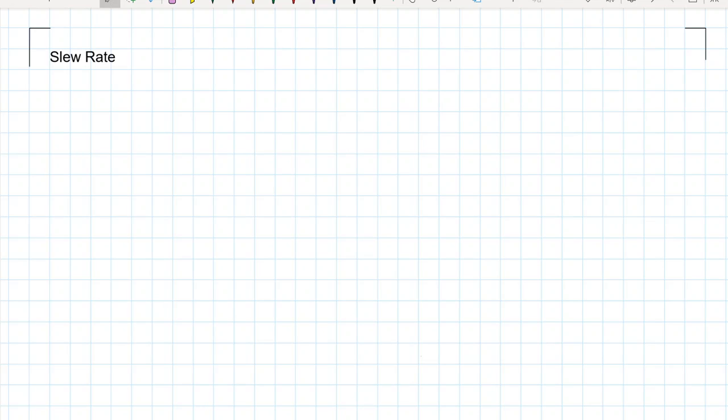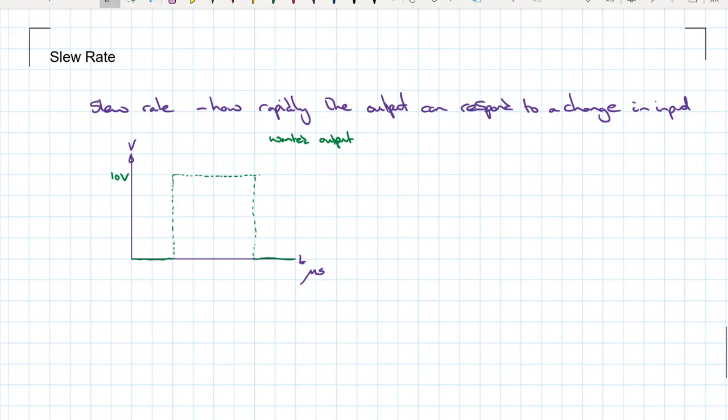An example would be if we're supposed to get some sort of square wave output from an amplifier, and what we get is instead of being a nice square wave, we get a sloping signal. This is what we should have got out, a nice little square wave, but in actual fact what we got is something like this.